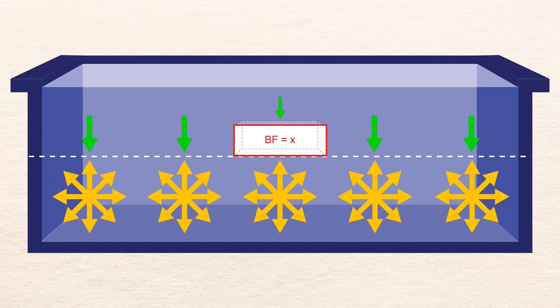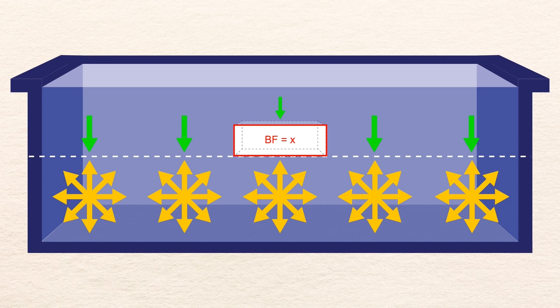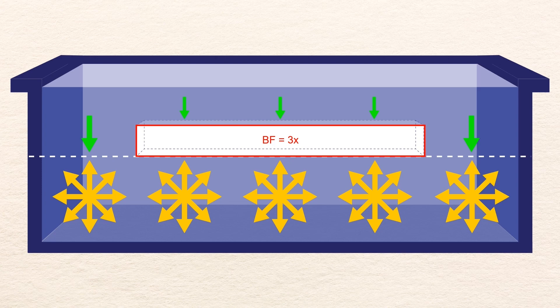So, to be clear, if a void this long gives you a buoyant force of x, then a void three times the length gives you triple the buoyant force, because that same pressure difference applies to an area three times larger. In accordance with Archimedes principle, there is also three times the missing water weight.